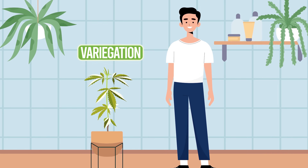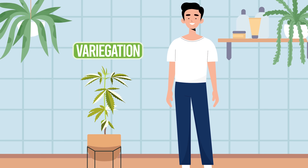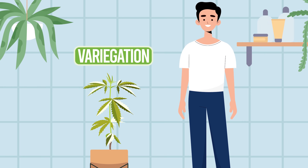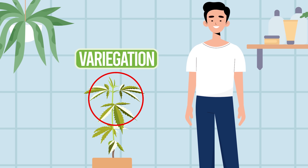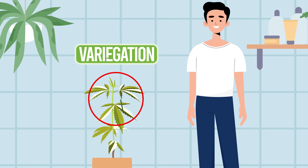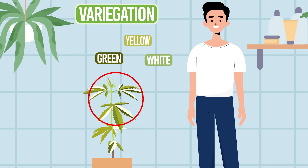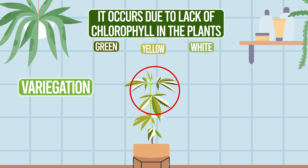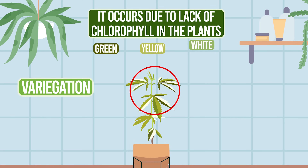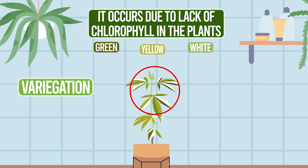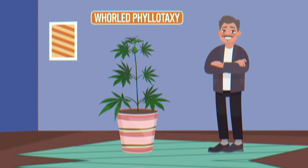Variegation is quite a common mutation in plants where you get a mutation of the leaf coloring with shades of green, yellow, and white, usually caused by an inability for the leaf to produce chlorophyll — the green color — in a plant.